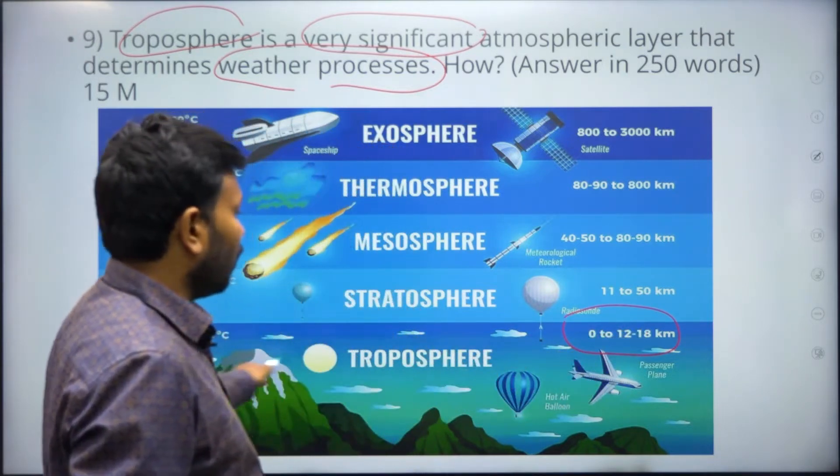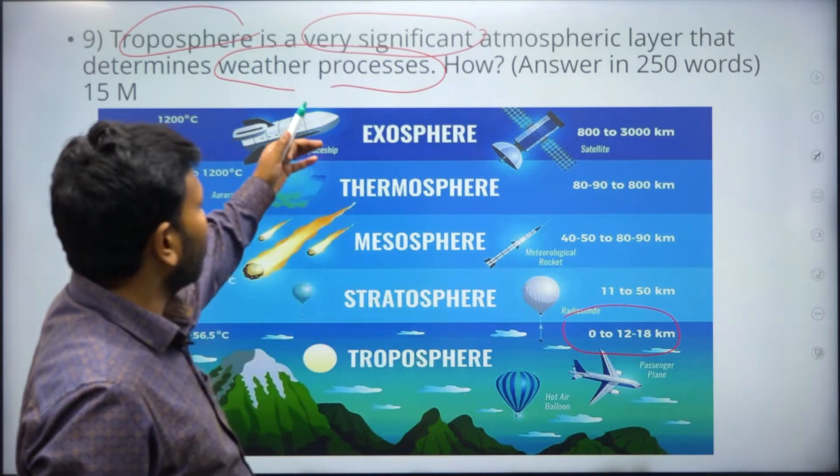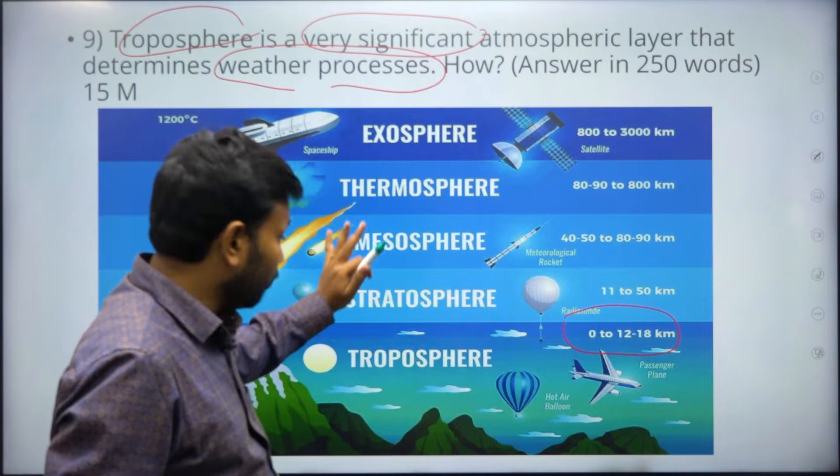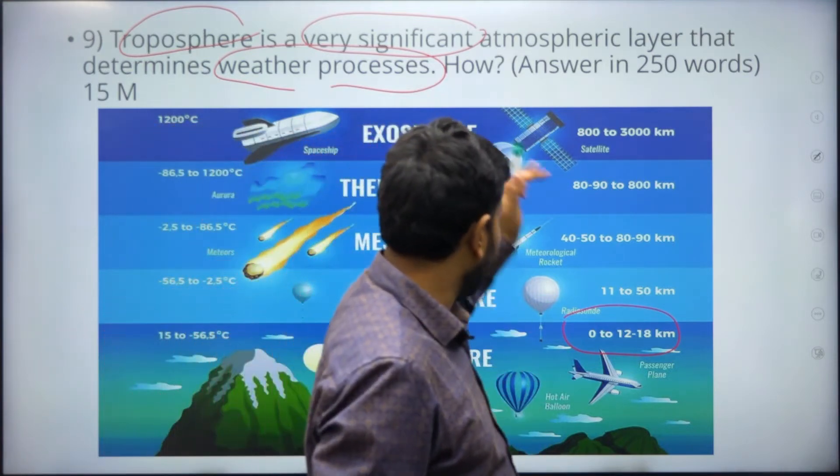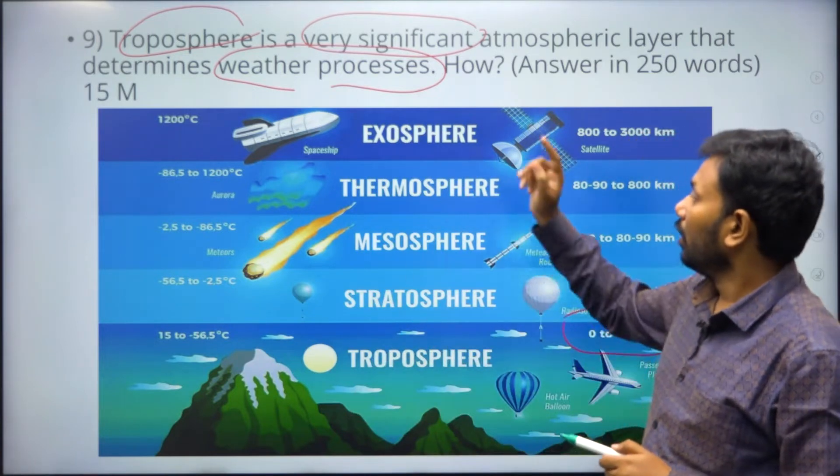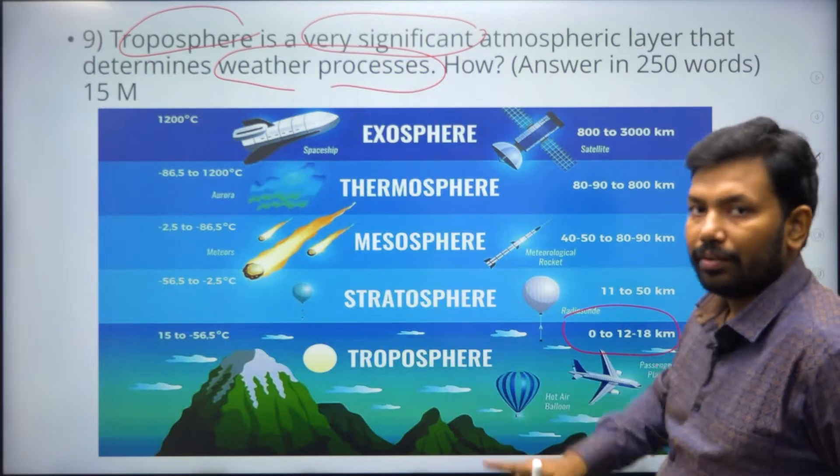All the airplanes and passenger planes travel here. You don't need to mention about that. Concentrate and stick to the topic. Don't waste your time. It's better not even to draw this diagram, just mention the names: stratosphere, mesosphere, thermosphere, and exosphere.